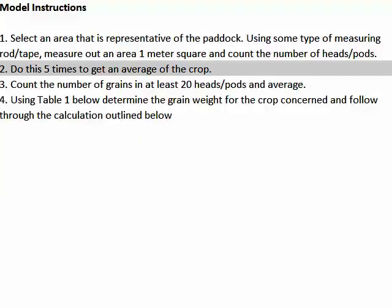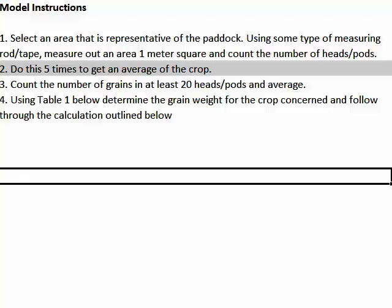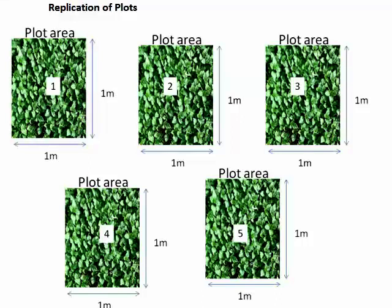Now we move on to Stage 2 of the model. Once you have collected one representative area of your paddock, you need to repeat this five times. This allows proper replication of your plots, resulting in an average number of heads for your plot.